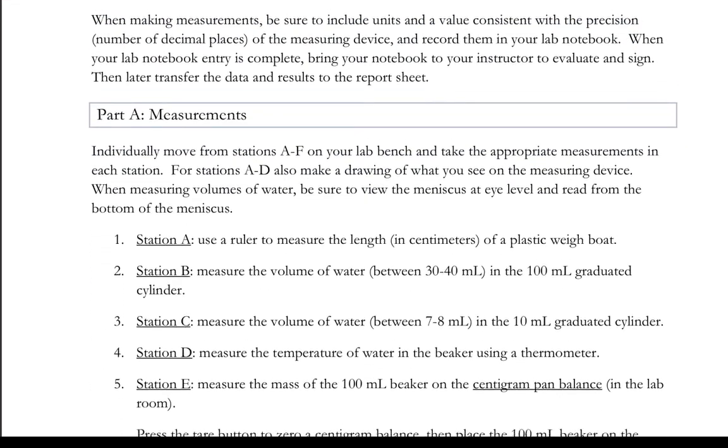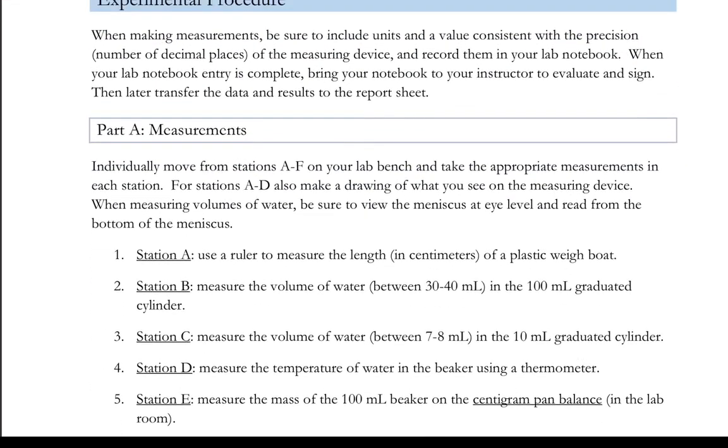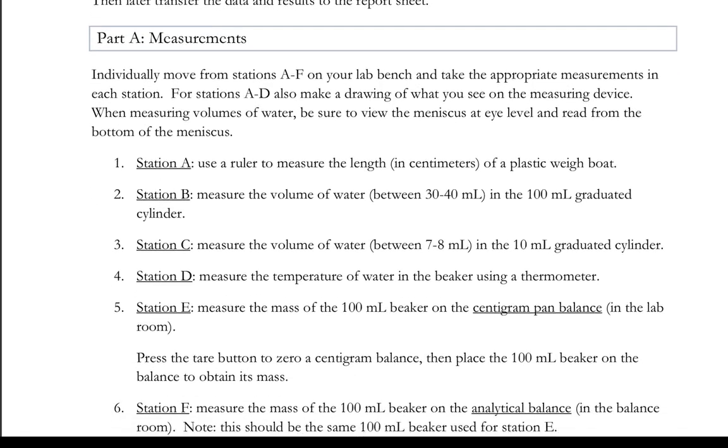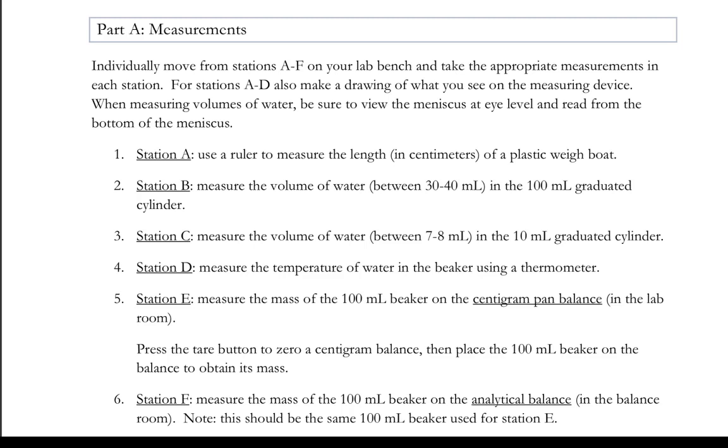The actual experimental procedure: in Part A, we are measuring the length of a plastic weigh boat using a ruler that allows us to get one more decimal than the example given in the write-up. In station B, we're using a 100 ml graduated cylinder just like the diagram shown in this lab write-up intro. Station C, we're using a 10 ml graduated cylinder, so one more decimal.